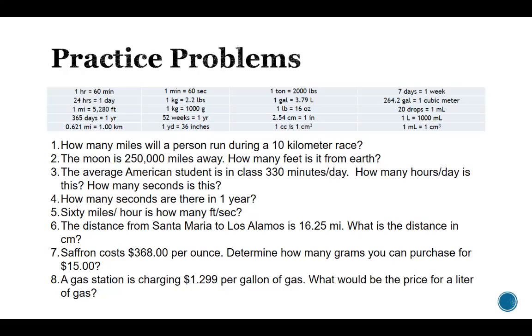So that should be pretty easy to do: 10 times 0.621 gives us 6.21 miles for a 10 kilometer race. All right. So try the rest of your hand at these. I'd be happy to go over any of them with you. And then we can talk about it again on Thursday.